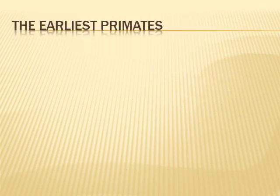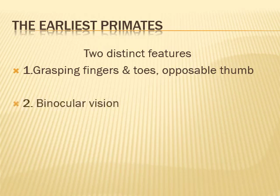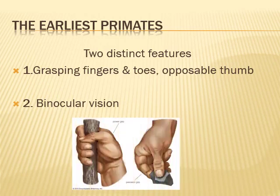The earliest primates had two distinct features through evolution that allowed them to succeed in the arboreal insect-eating environment. The first is grasping fingers and toes and opposable thumbs, which allowed them to grip limbs, hang from branches, and use tools. The other is overlapping binocular vision, which lets the brain judge distance precisely.